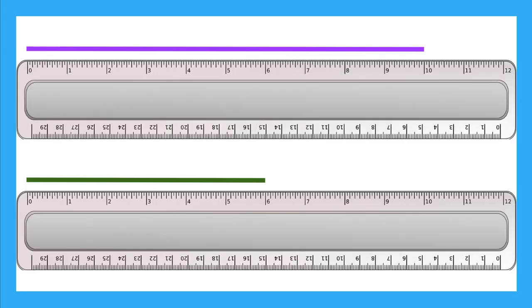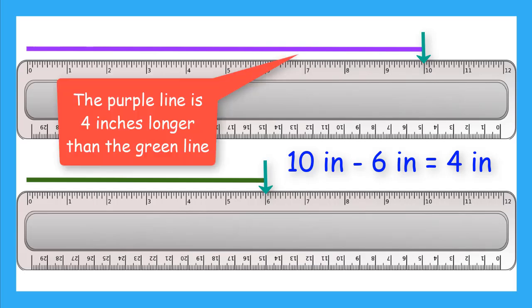Well, we can use our ruler to compare the measured lengths of these lines. Now with our rulers in inches, we can measure the purple line at 10 inches and we measure the green line at 6 inches. How many inches longer is the purple line? Well, now we just have a subtraction problem. 10 inches minus 6 inches is 4 inches. So the purple line is 4 inches longer than the green line.